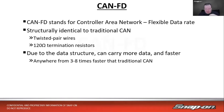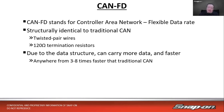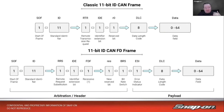CAN FD stands for controller area network flexible data rate. It's able to send more data with the same basic structure — structurally identical to traditional CAN with twisted pair wires and 120-ohm termination resistors, but due to how the data is structured it can carry more data and be faster. On average it's three to eight times faster than traditional CAN, and you can mix CAN FD and regular CAN modules on the same network.